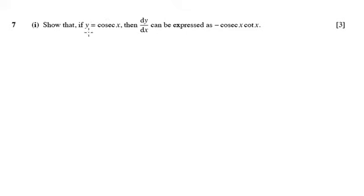Question 7, part 1, gives us that y equals cosec x. Now cosec is the same as 1 over sine x, and it asks us to differentiate this.